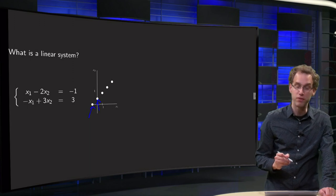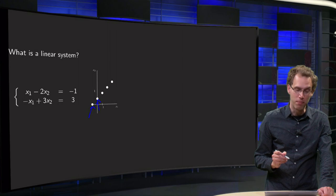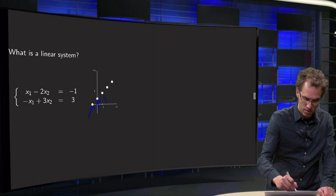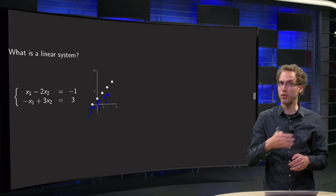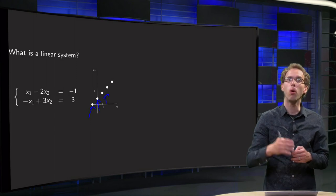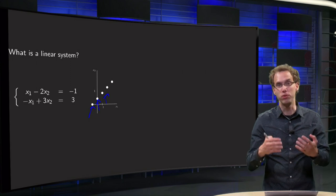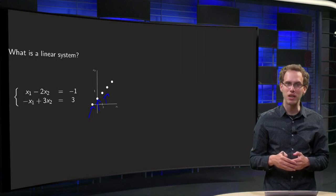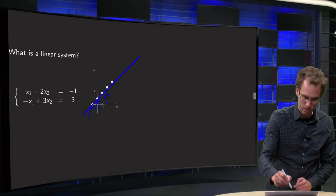And if we set x1 equals 1, we get minus 2x2 equals minus 2, so x2 equals 1 — that's this point. We can do all different values of x1 and compute which x2 we get. And you see, it looks like those points are lying on a straight line.